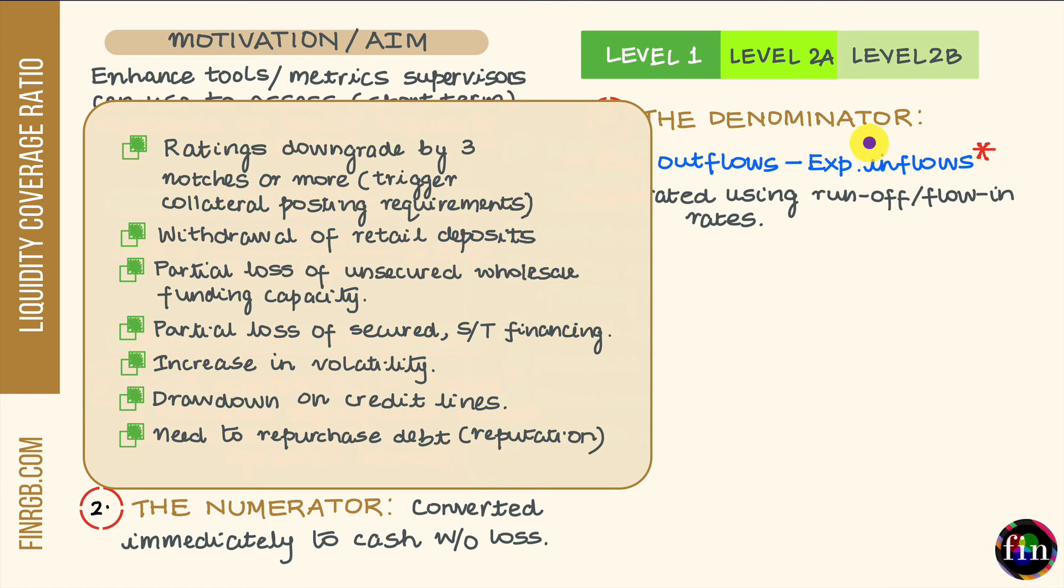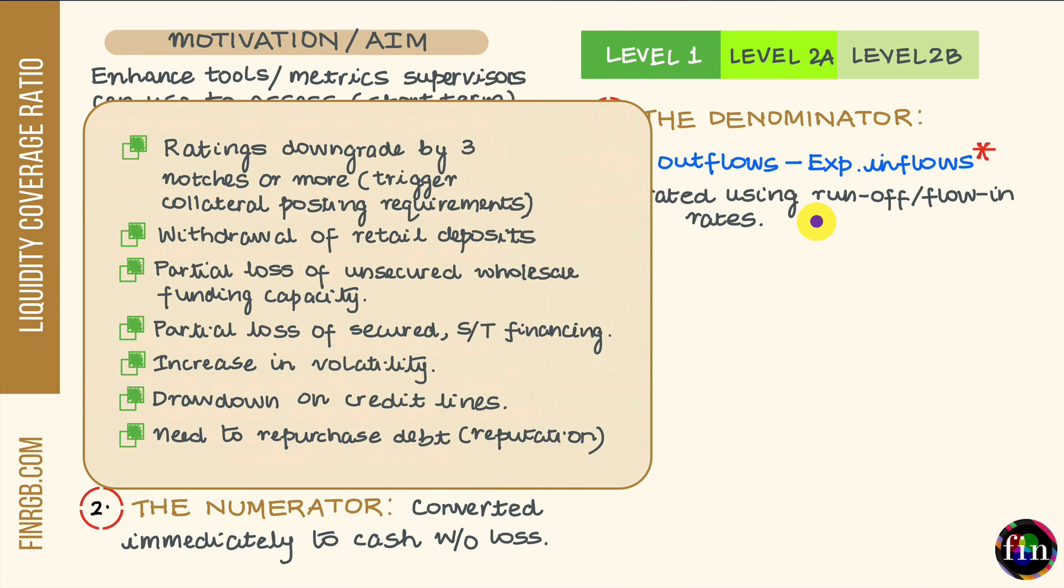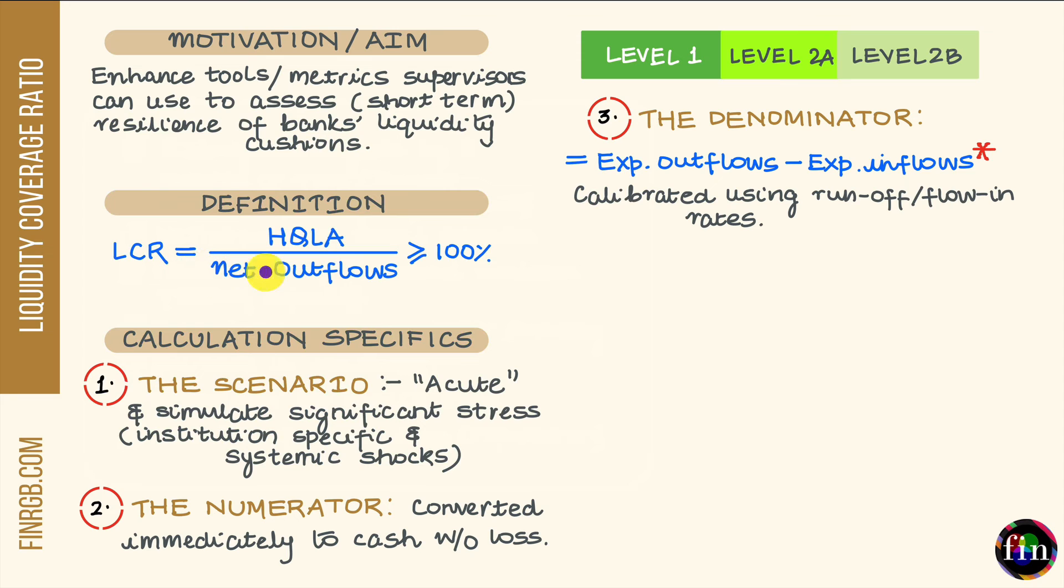For your expected cash inflows, you have to run through all your contractual receivables during the upcoming 30 days and multiply each of these receivables by an appropriate flow-in rate, again rates which are specified by the supervisor. This is how you calculate your LCR.